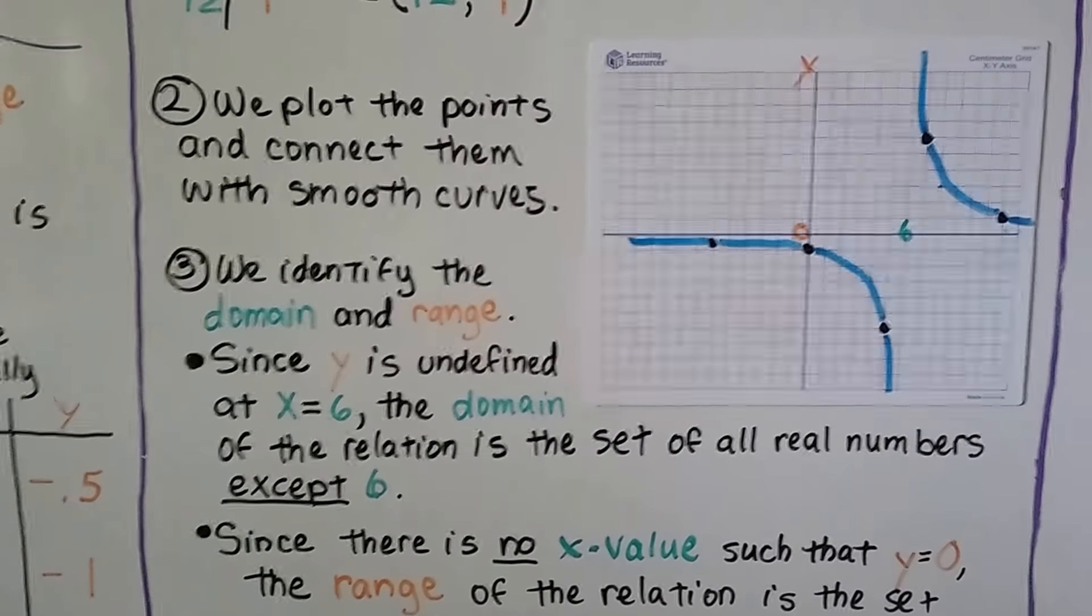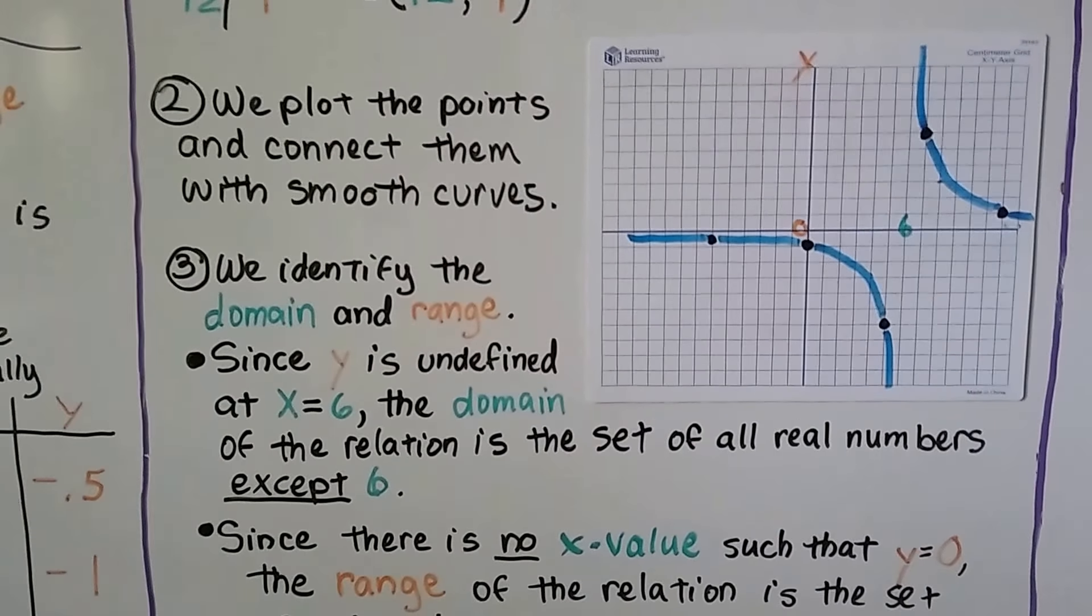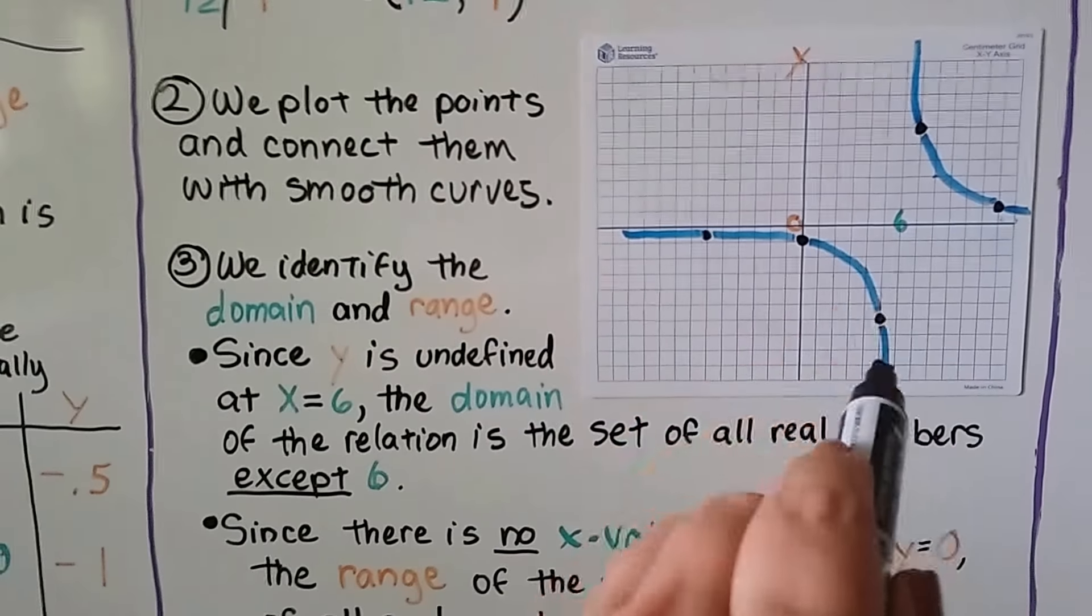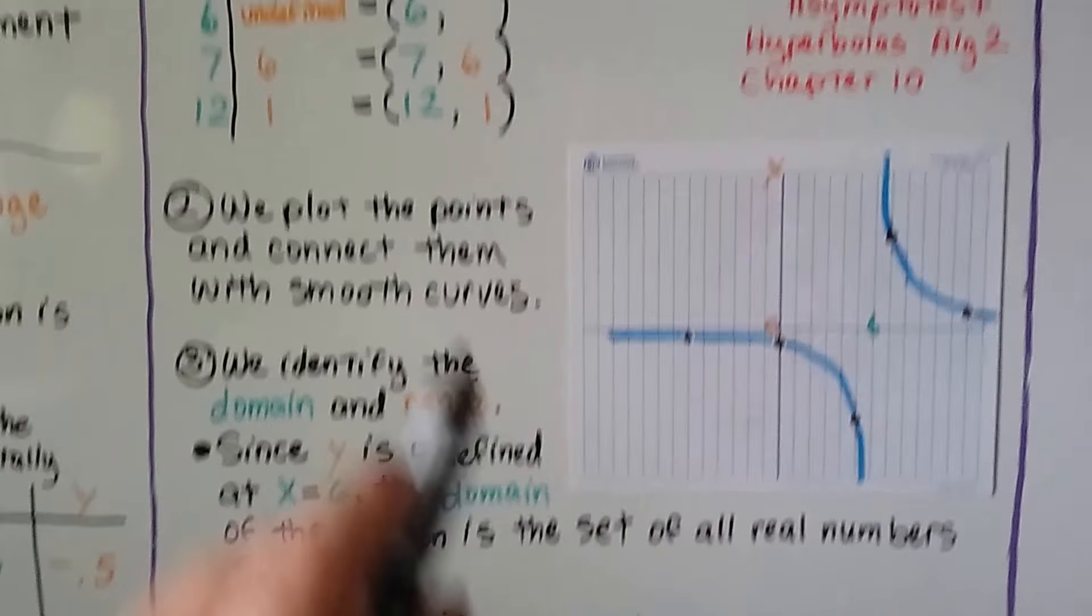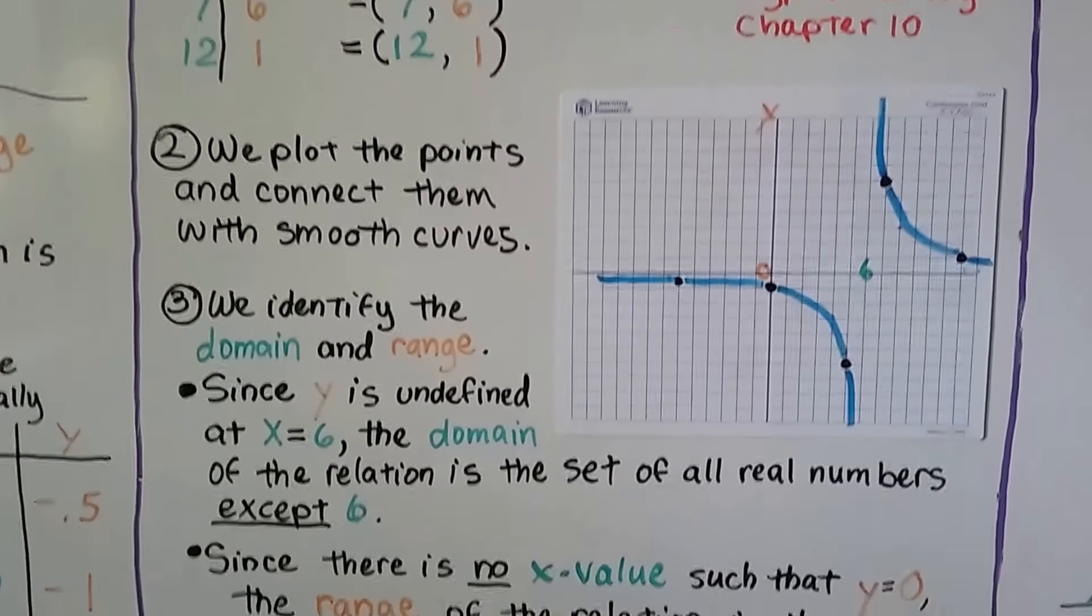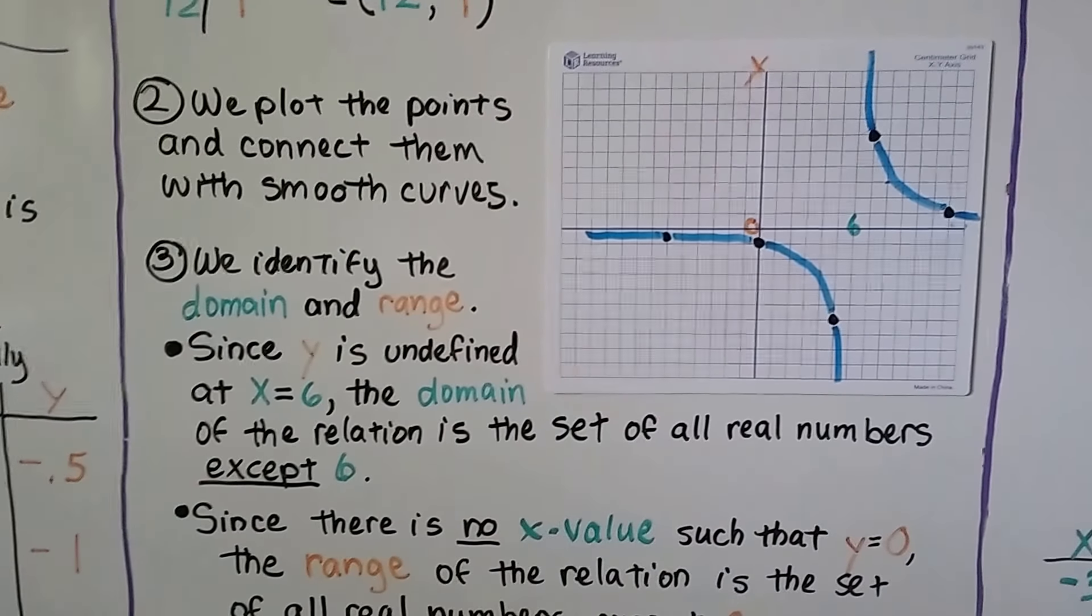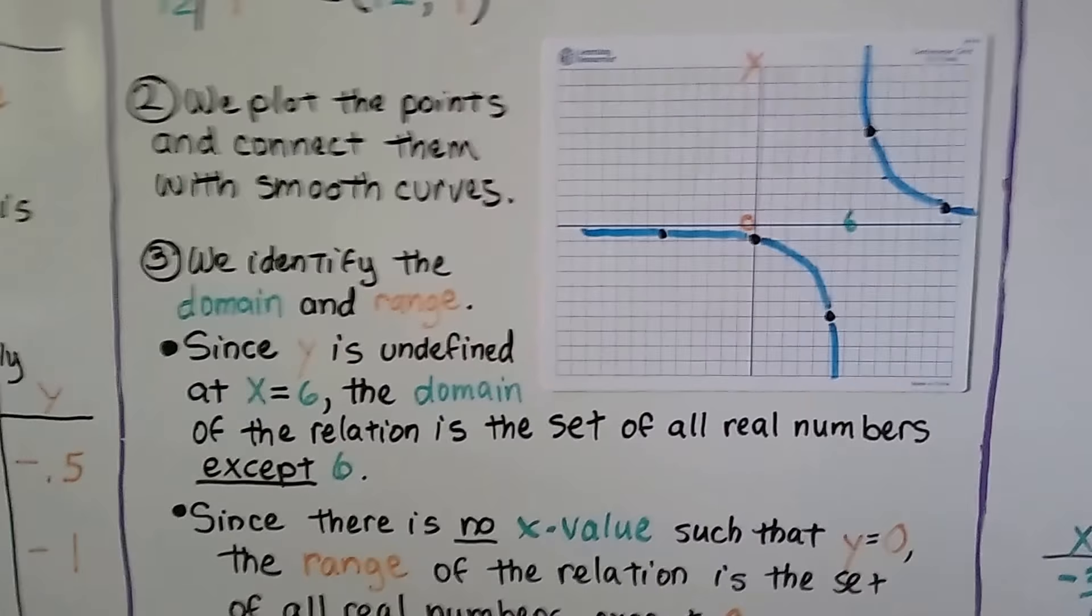We identified the domain and range. And since y is undefined at x equals 6, this is where x is equal to 6 and y is undefined. We found that. The domain of the relation is the set of all real numbers except 6.